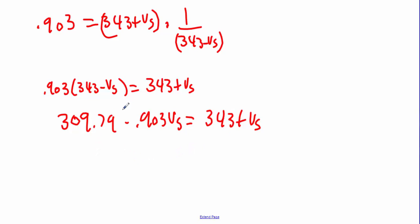So I can add that over and subtract that, so 309.79 minus 343 is negative 33.2 equals 1 plus 0.903 or 1.903v_s, and divide that negative 33.2 divided by 1.903. And I see negative 17.447 meters per second.